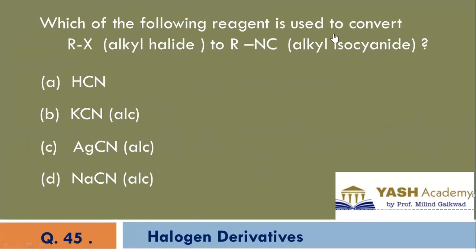Which of the following reagent is used to convert RX, that is alkyl halide, to RNC, that is alkyl isocyanide? X group is replaced by NC. C is the correct option.